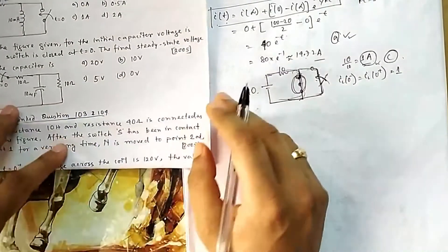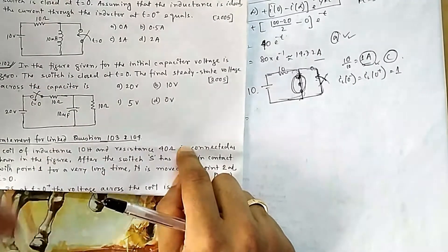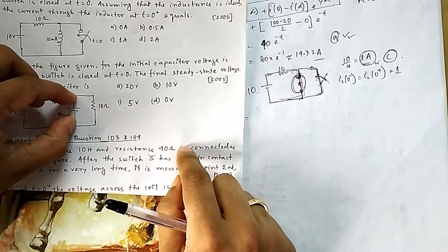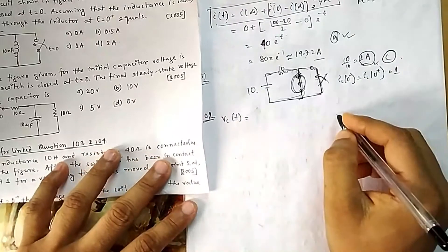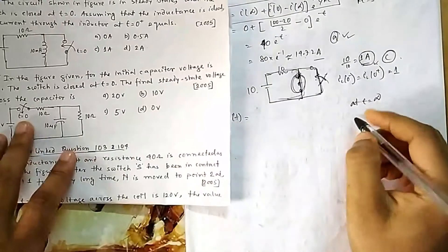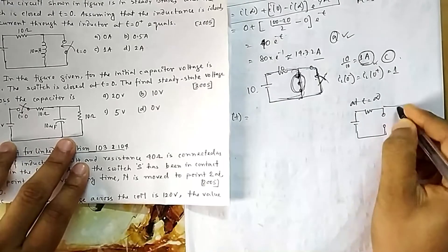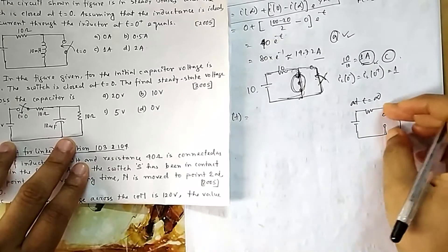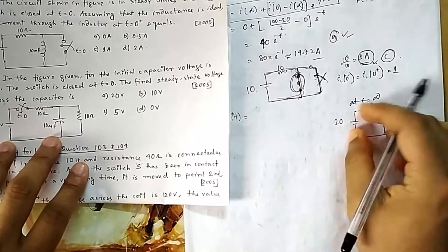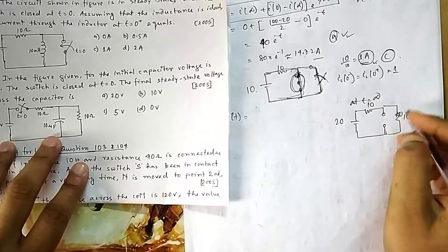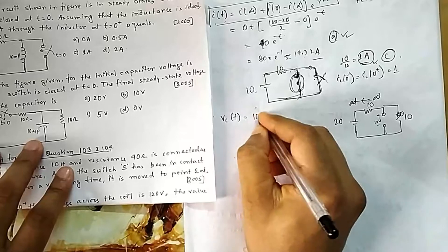We need to find the final voltage across the capacitor. In final/steady-state conditions, if the circuit is on for infinite time, the capacitor gets fully charged and acts as an open circuit. At t equal to infinity the circuit has 20V divided across two 10Ω resistors in a 1:1 ratio, so the final voltage across the capacitor is 10 volts.